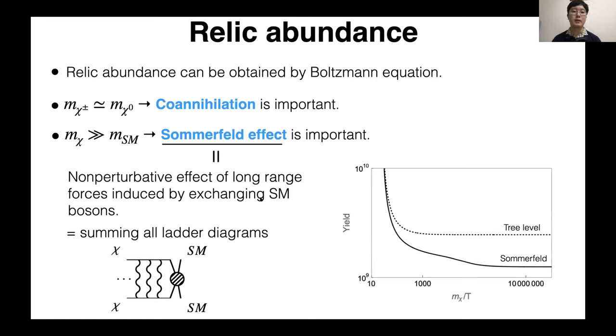Next, I'll talk about relic abundance. Relic abundance can be obtained by solving Boltzmann equations. In solving, there are two effects to consider. Due to the strong degeneracy between chi plus-minus and chi zero in mass, co-annihilation process is important. In other words, besides the two-body states chi zero chi zero, we should consider the other two-body states, like chi plus chi zero or chi plus chi plus.